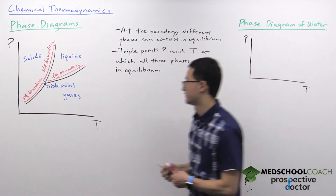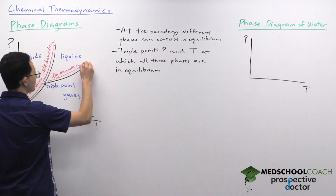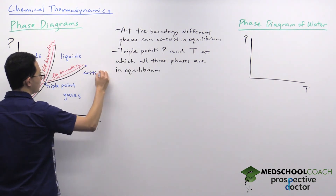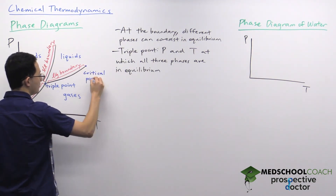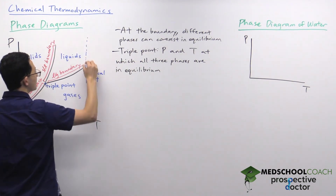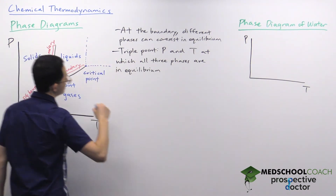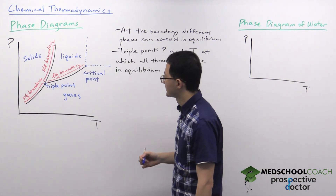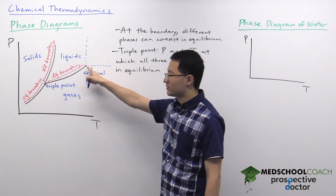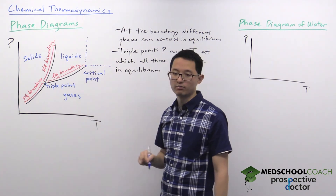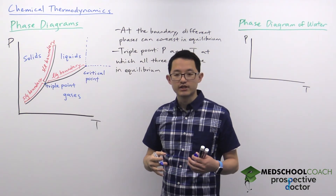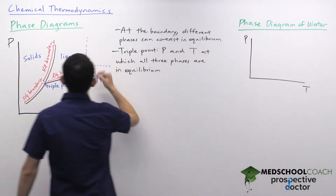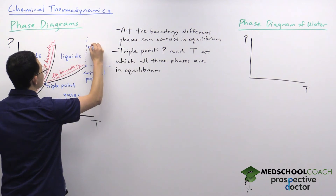Another important point on the phase diagram is the critical point. The critical point is important because it is the upper limit for where we are able to distinguish liquids from gases. If you exceed the pressure and temperature of the critical point, you can no longer distinguish between liquids and gases, and what you have in that region is what we call supercritical fluid.